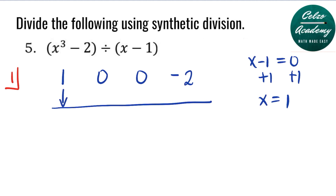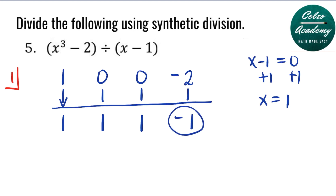Step 1 is to bring down the leading coefficient 1. We multiply 1 by the value indicator 1, that's also 1. Adding 0 plus 1, that's 1. Repeat the process: 1 times 1, we have 1. Adding 0 plus 1, that's also 1. 1 times 1, we have 1. Adding negative 2 plus 1, we have negative 1. The remainder is negative 1.